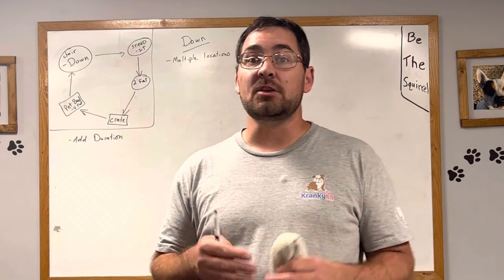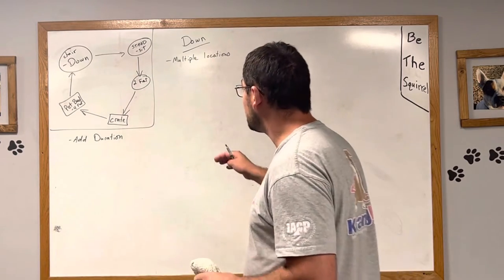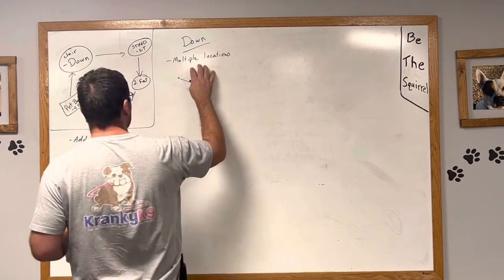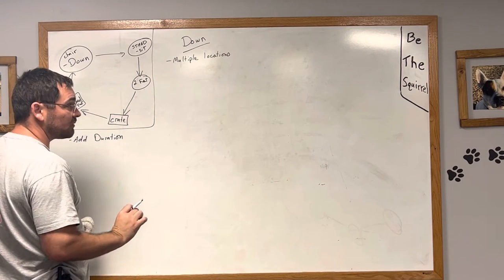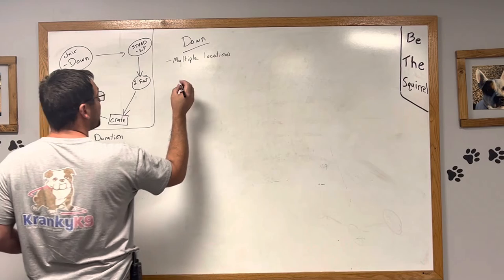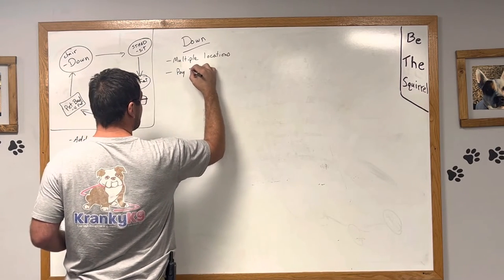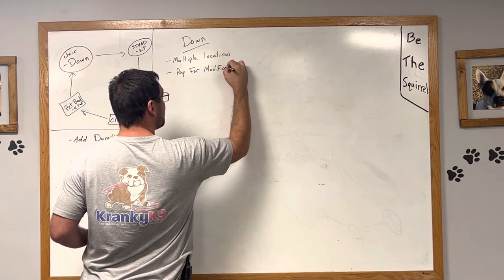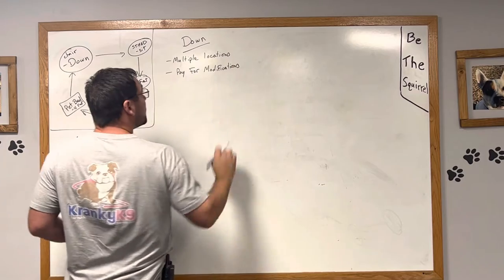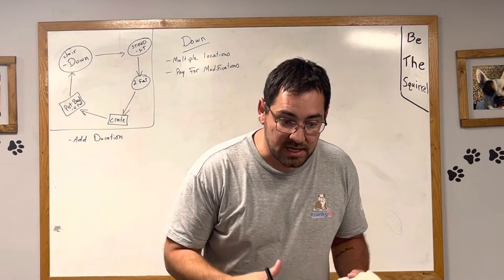Let him understand that when I sit you down, that's just how this works. So multiple locations to show him that it's more about the human sitting as the cue and less about the specific location that you were using throughout the week. The next thing that I want to do is start to pay for modifications.